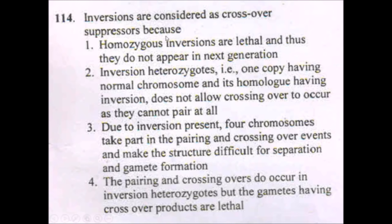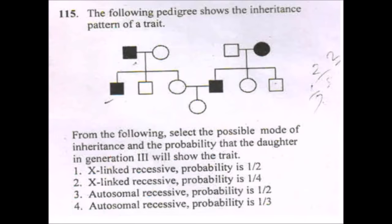Next question: inversions are considered crossing-over suppressors. When a chromosomal segment is inverted by 180 degrees and reintegrated, the sequence is reversed. If crossing-over occurs within the inversion loop, it produces lethal (unbalanced) gene combinations. Therefore inversions suppress effective crossing over. The answer is option 4.